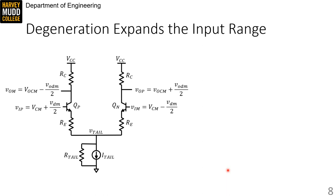The narrow input range of emitter coupled pairs is annoying, but degeneration can increase it. So I've drawn an emitter coupled pair with additional emitter degeneration here.